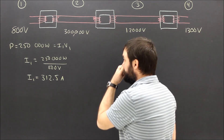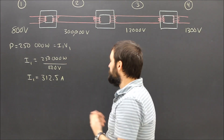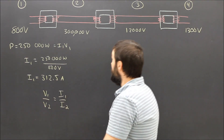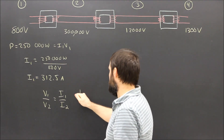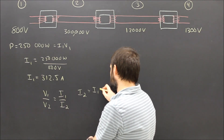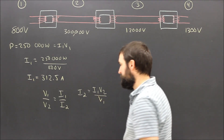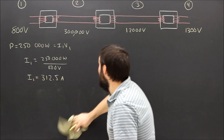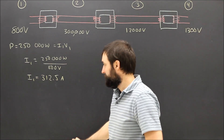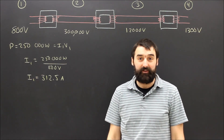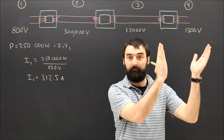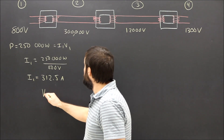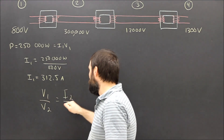These are 100% efficient transformers. What's the current in step two? To find that, we're going to use the transformer formula: V1 over V2 equals I2 over I1. And we can see that I2 is equal to I1 times V1 over V2.